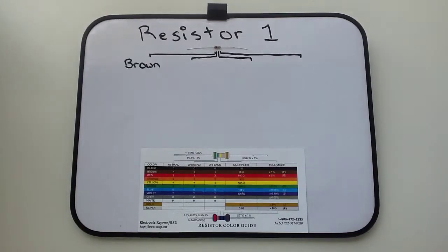This resistor's band colors are brown, black, yellow, and gold. Brown is equal to 1, black is 0, yellow is 4, and gold is plus or minus 5%.